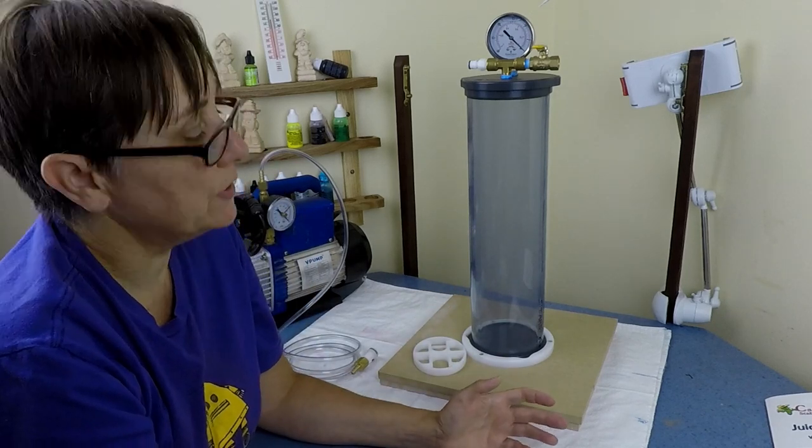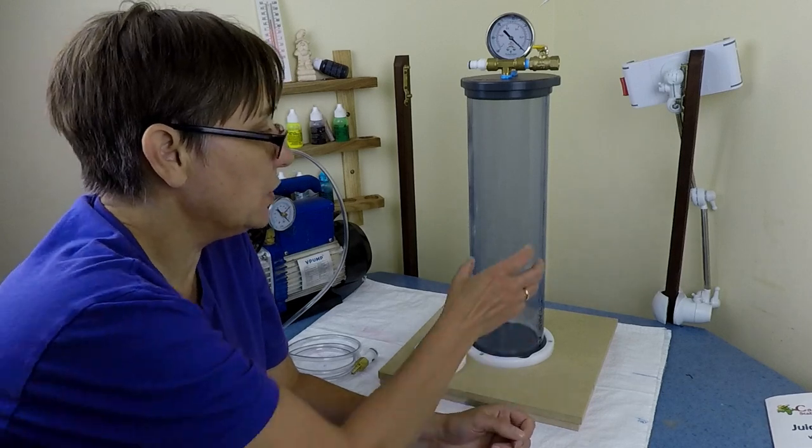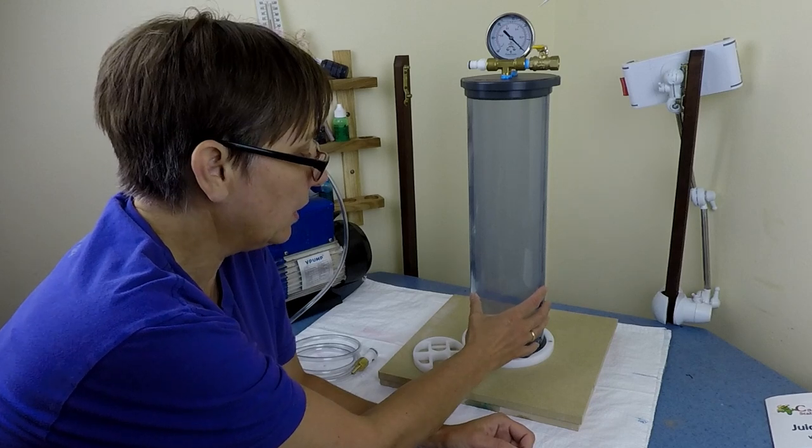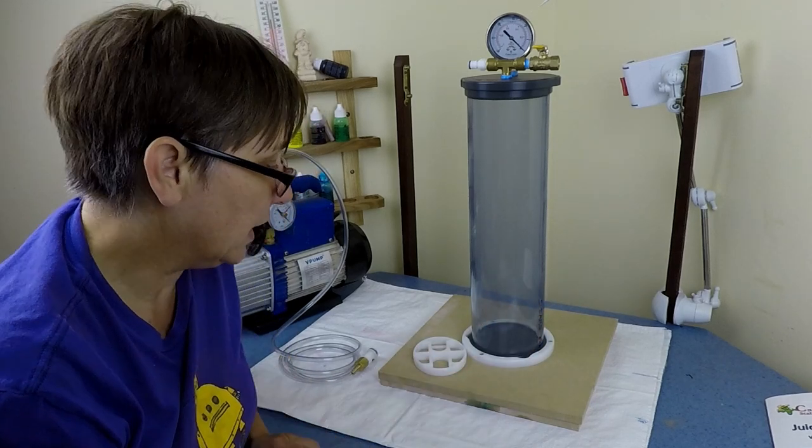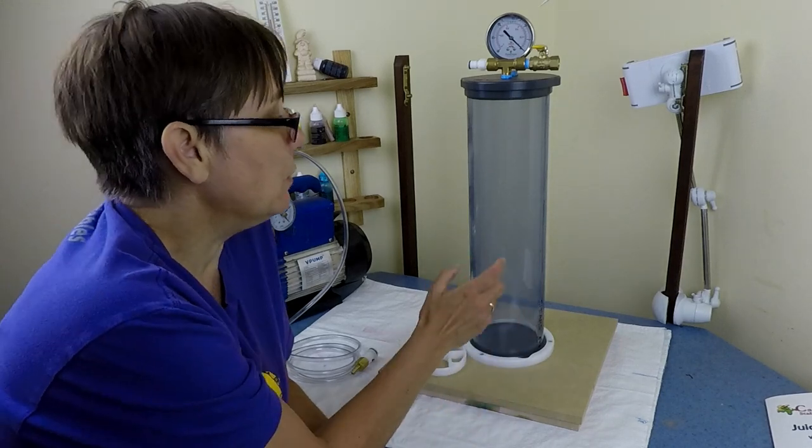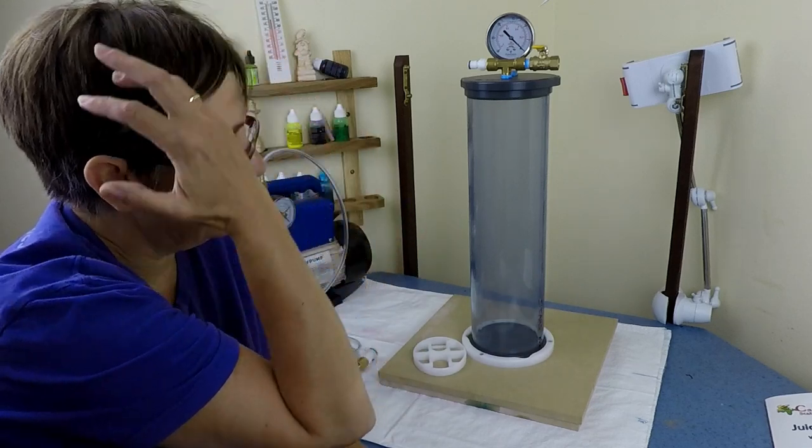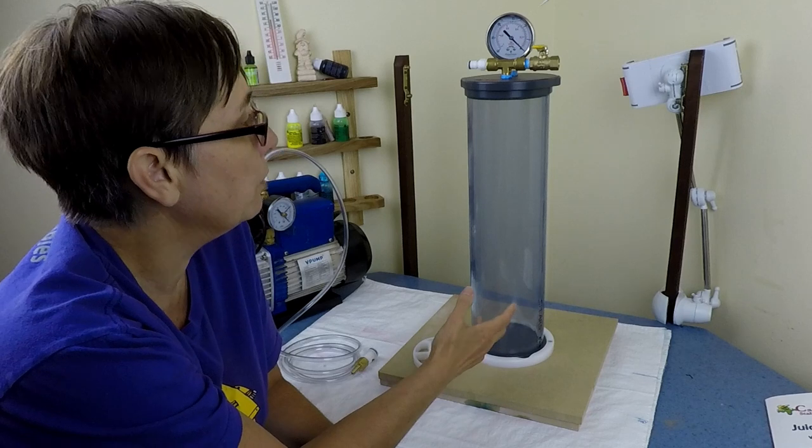I have a vacuum chamber, a different one. I actually wanted one of these right at the beginning, but at the time you could only get them in America and I just couldn't afford to get the postage on it to get it into the country. House of Resin now stock these in several different sizes. This is, I think, four by four inch by sixteen.